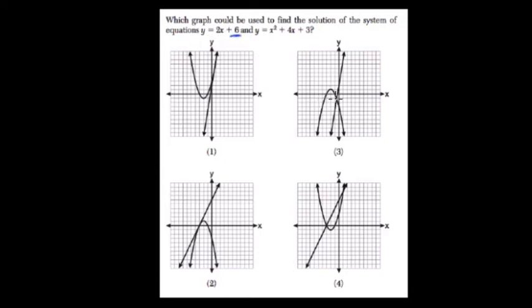So here, out of the choices they give us, choice 3 can't be correct because it doesn't cross the y-axis at 6. Neither can choice 1.